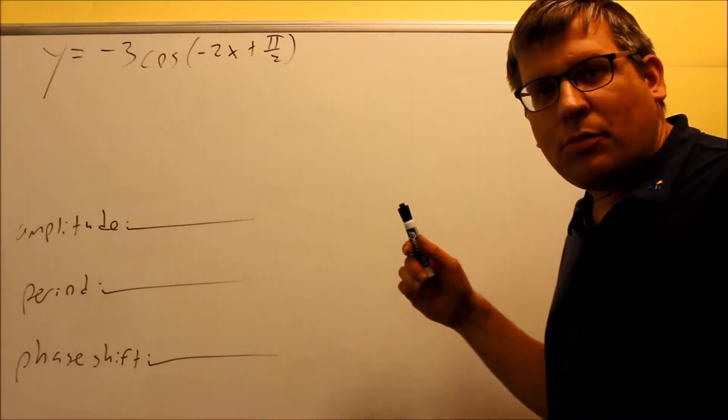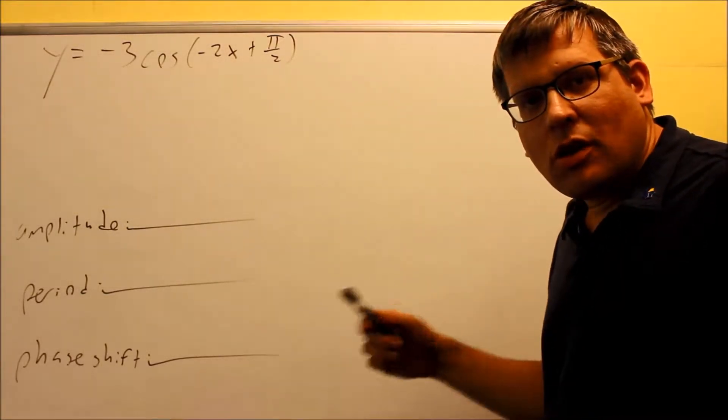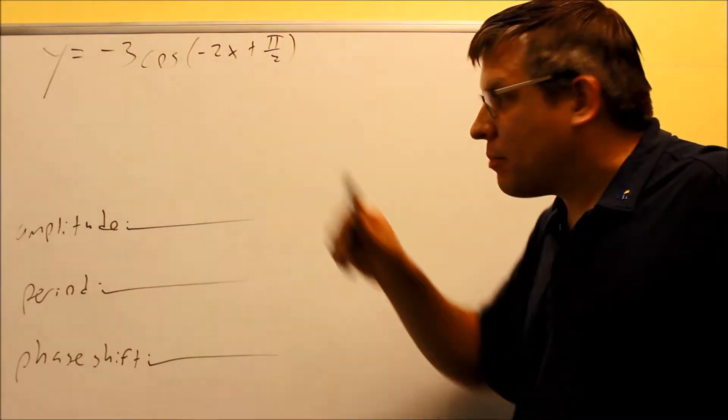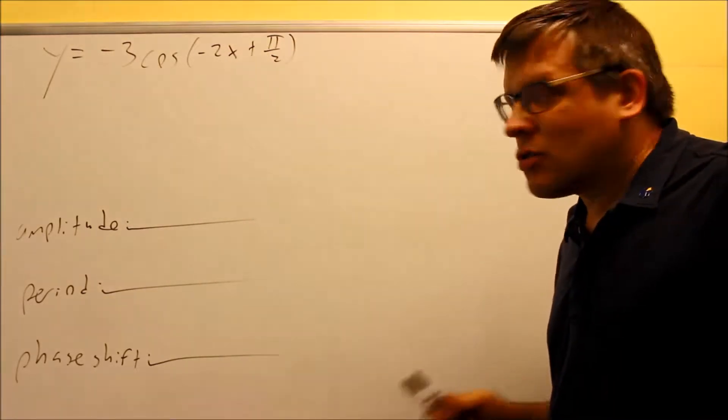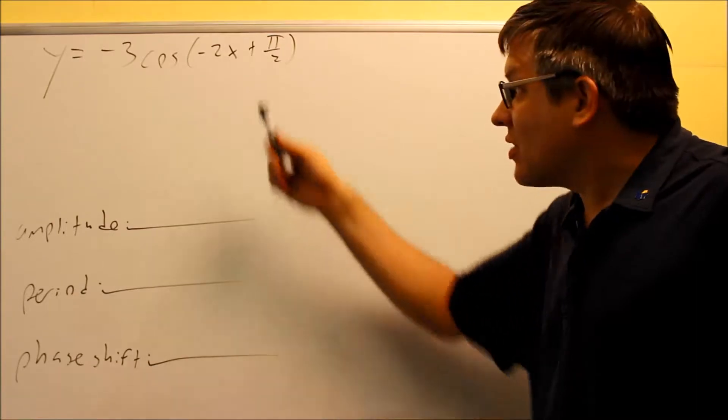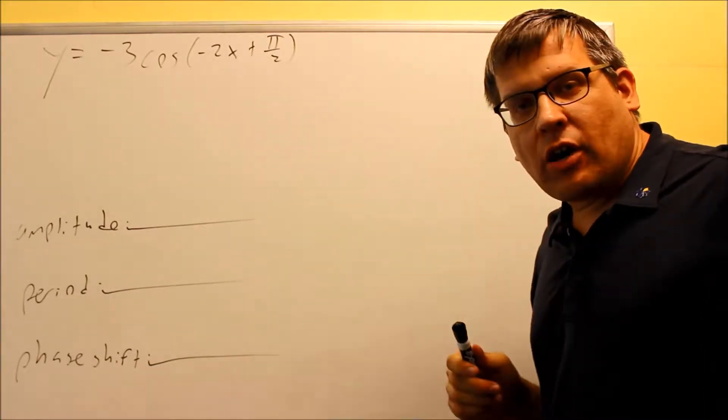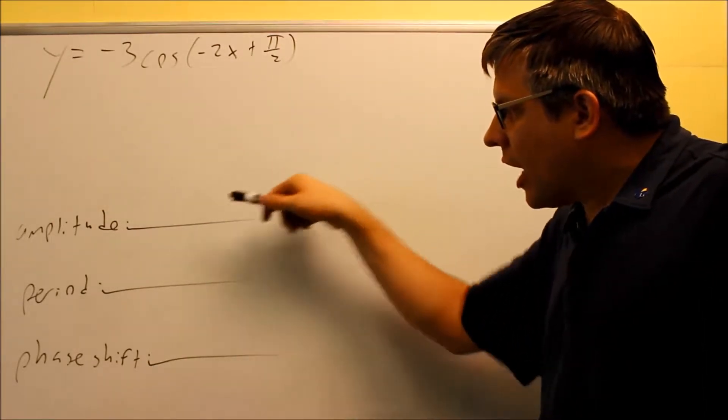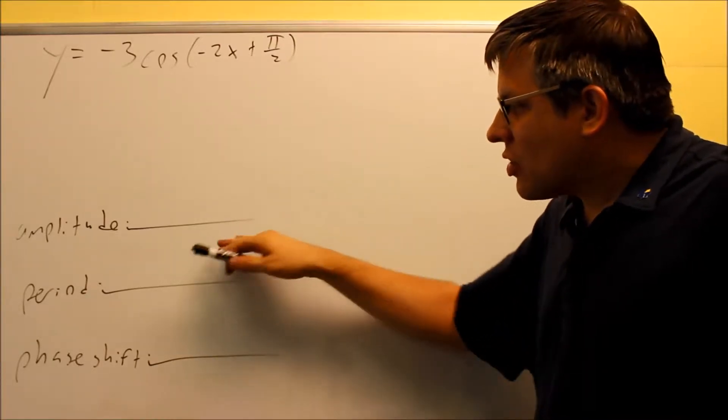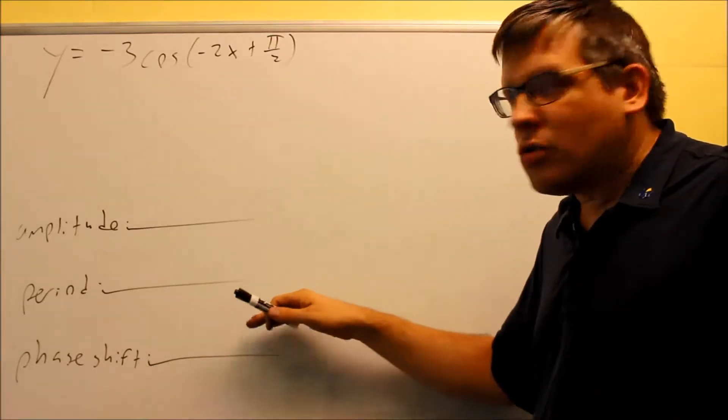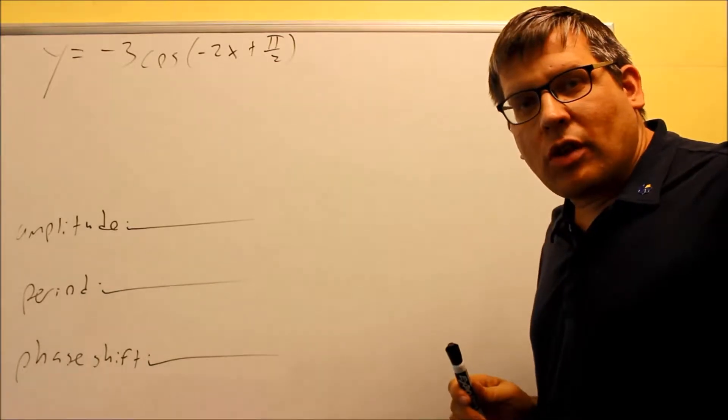Okay, for the other examples that we looked at previously in this section, we only focused on ones that had a positive in front of the x. So now we need to look at one that has a negative, so that way you know how to handle that one. These down here, the amplitude, period, and phase shift, especially these down here, you should only do if you don't have a negative there in front of the x.